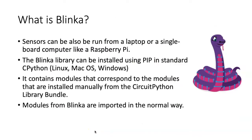Before leaving the subject of modules, I want to mention a term that you hear sometimes in online documentation, and that is Blinka. Blinka is a large library that includes all of the modules that you're likely to use for sensors. Obviously, it's not practical to install all of those on a tiny board, but for a single board computer like a Raspberry Pi, which has a large amount of storage capacity, or if you want to run sensors directly from a laptop, the Blinka library allows you to communicate with the sensors from either the laptop or a single board computer.